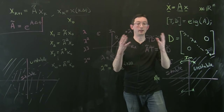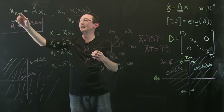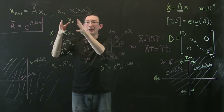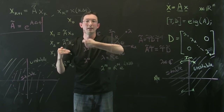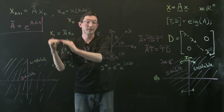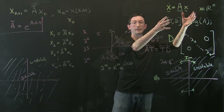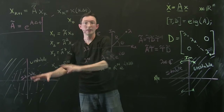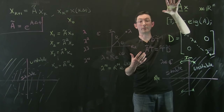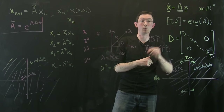In continuous time, if the eigenvalues have negative real part it's stable; if a single one has positive real part it's unstable. In discrete time, all eigenvalues of Ã must be inside the unit circle with magnitude less than one; any eigenvalue outside makes it unstable. The reason for covering discrete time is that many control concepts — like controllability — are easier to understand this way. Next, we'll look at how to get linear systems from nonlinear equations and what happens when we add +Bu to analyze controllability.